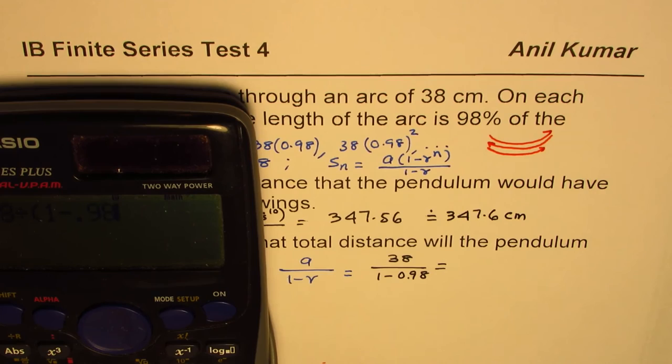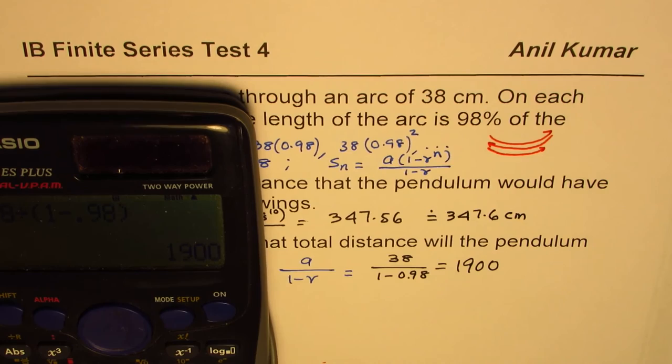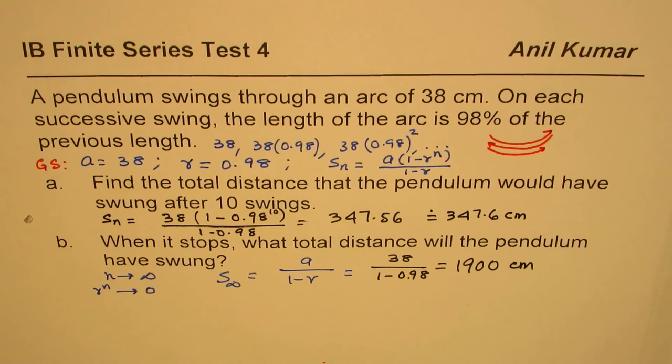We'll do this as 38 divided by within brackets (1 minus 0.98), which is equal to 1900. So it will be 1900 centimeters, the total distance.